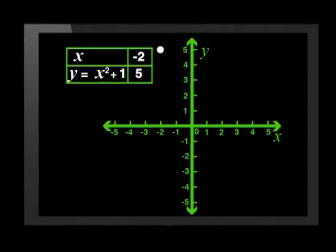So, it's negative 2, 5, negative 1, 2, 0, 1, then 1, 2, and 2, 5. That's more than enough points to give us the pattern for the graph.